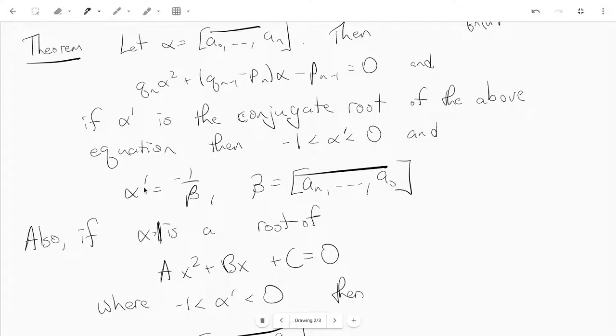and if we look at the reversed periodic continued fraction, then the other root, alpha dash, is negative 1 over beta.